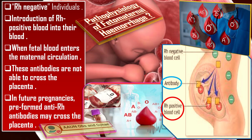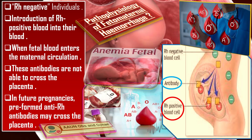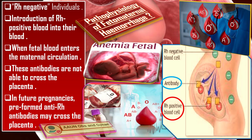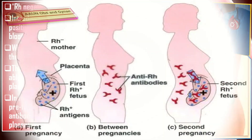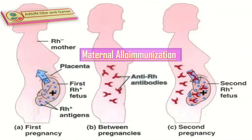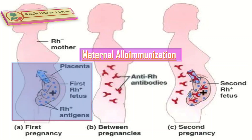However, in future pregnancies, preformed anti-RH antibodies may cross the placenta and destroy the infant's RH positive red blood cells, resulting in fetal anemia, i.e. a low level of red blood cells. This is known as maternal alloimmunization. This picture shows the development of antibodies to the RH antigen, which occurs when an RH negative mother is pregnant with an RH positive fetus and is exposed to fetal blood.